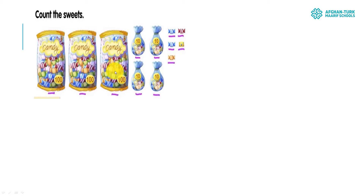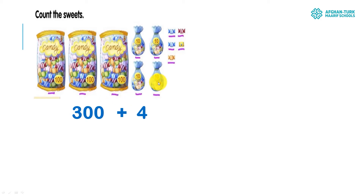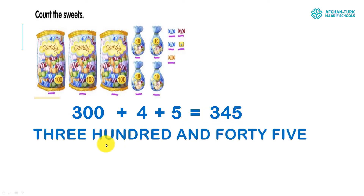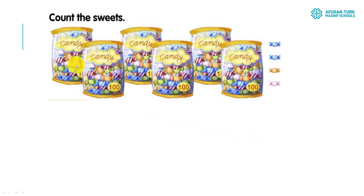Now count the suites. We have 100 suites, 200 suites, and 300 suites — plus 10, 20, 30, 40 — that's 40 suites, or 4 tens. Plus how many ones do we have? 1, 2, 3, 4, 5 — we have 5. So 300 plus 4 tens plus 5 ones equals three hundred and forty-five.